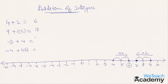The third example is minus 3 plus 4. The first thing you need to do is mark the number minus 3 and move towards the right, because we are adding a positive integer — that's number 4. Once you move four steps towards the right, you stop at number 1, which is the answer. That's minus 3 plus 4 equals 1.